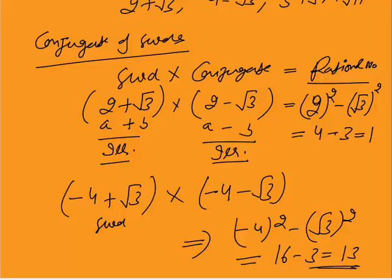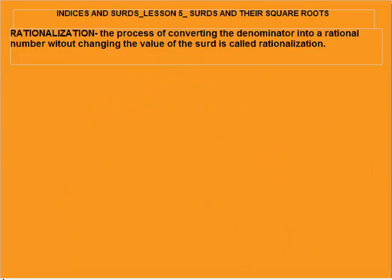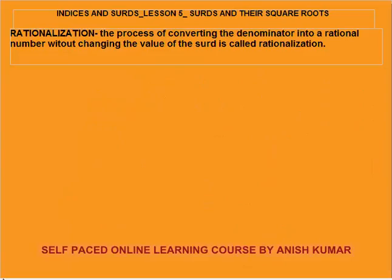A surd multiplied into its conjugate will always give you a rational number. Next is rationalization. The definition says that the process of converting the denominator into a rational number without changing the value of the surd is called rationalization.